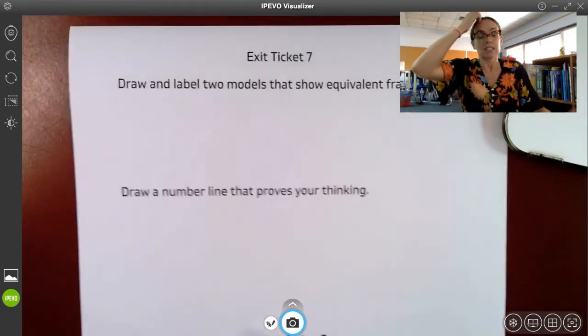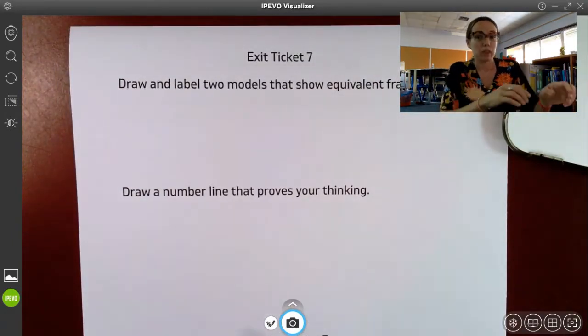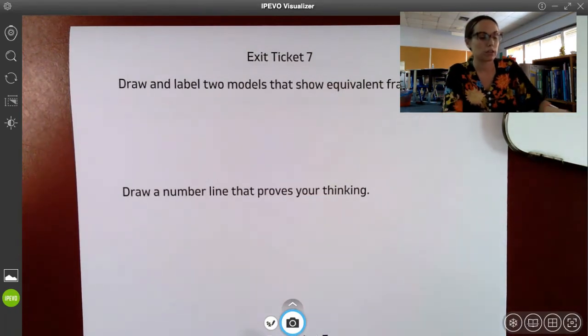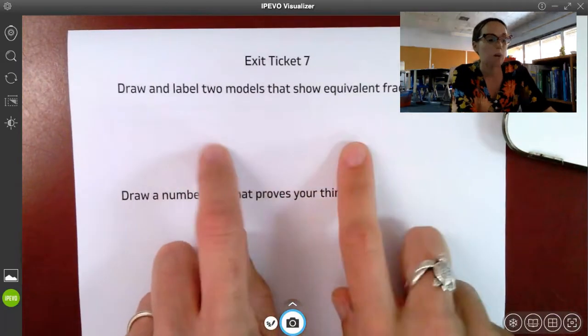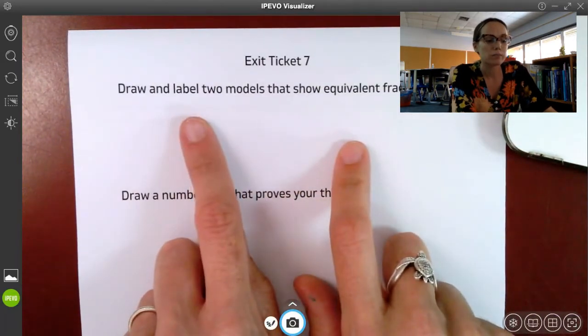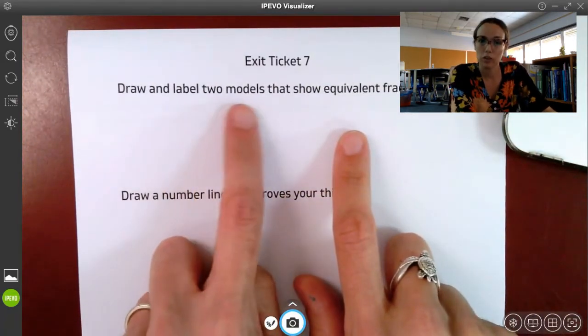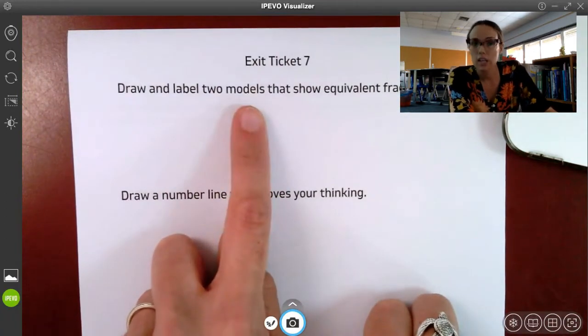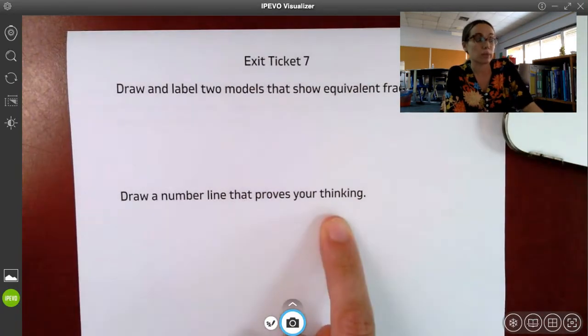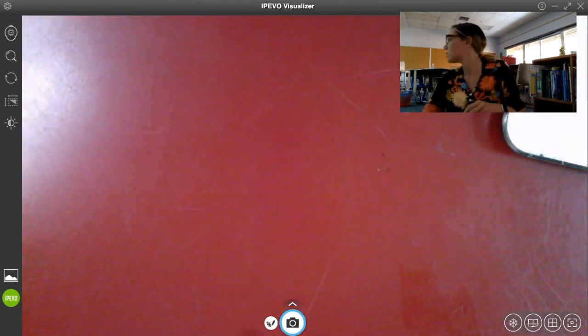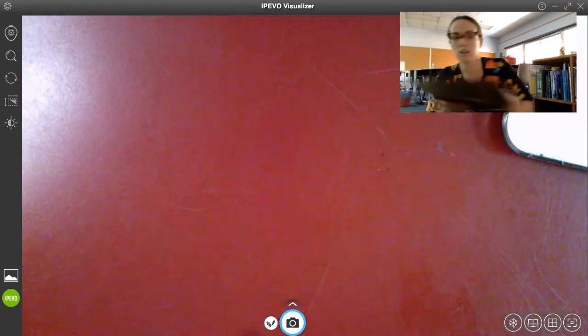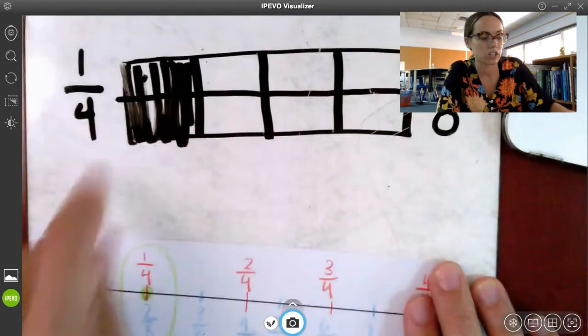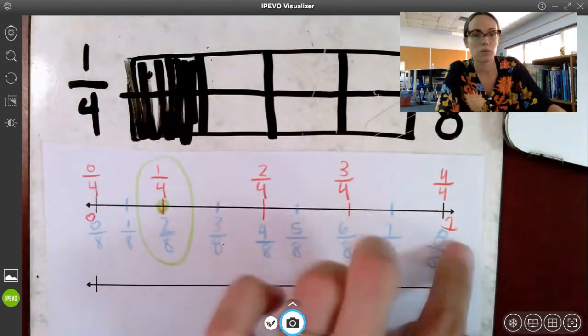Then on the back side, it's kind of exactly what I was just doing. Pick a fraction, right? Pick two fractions and show with two different models, show some equivalent fractions. So the models, remember that's a drawing. Like pick a shape, partition it and shade it and pick the fractions and then draw a number line that proves your thinking. So just like what I was doing here, I drew my model. I showed how it's both fractions and then I did the same thing with a number line.